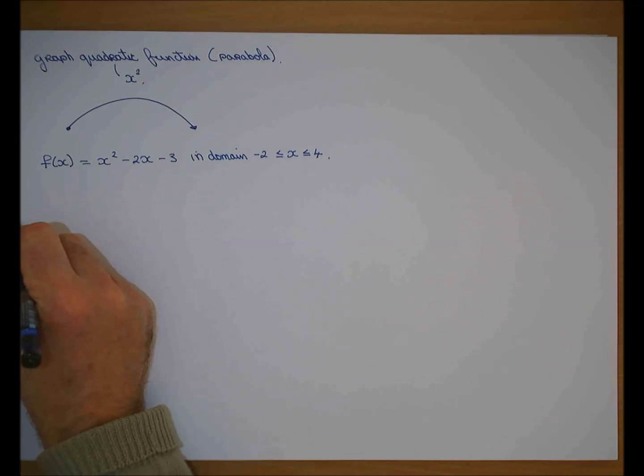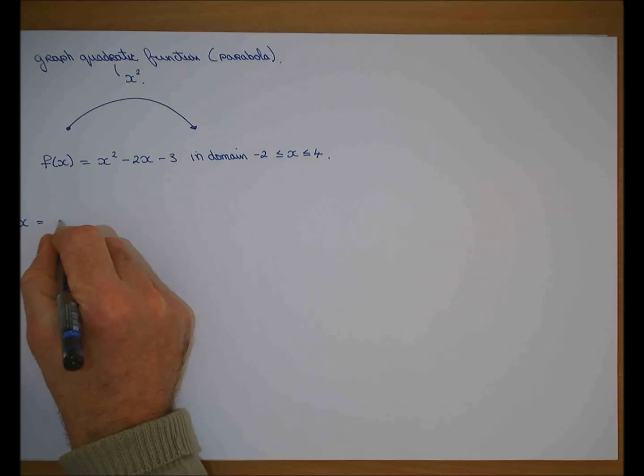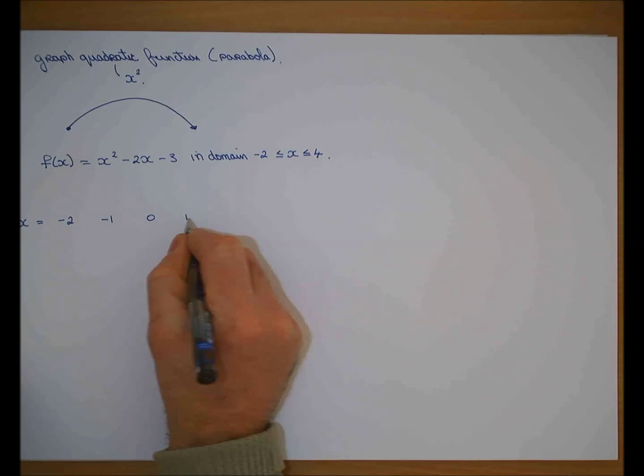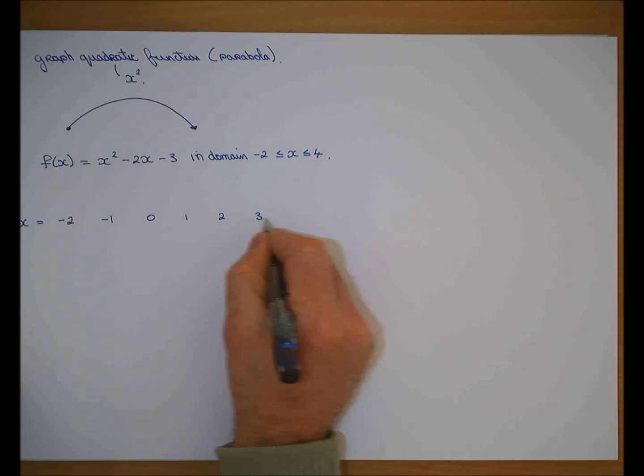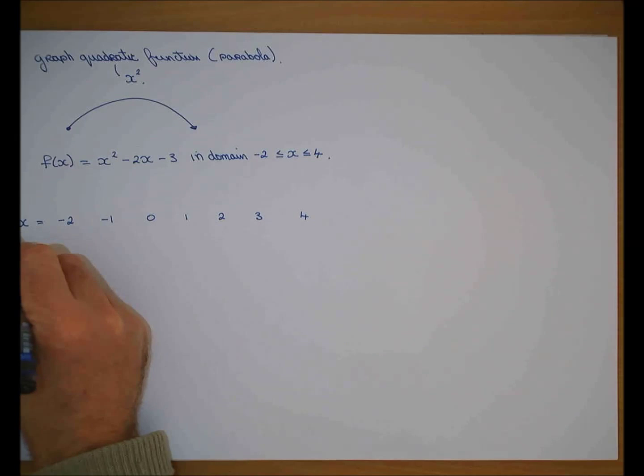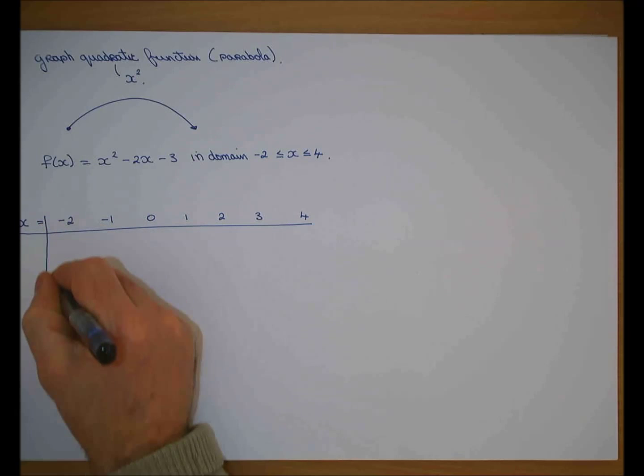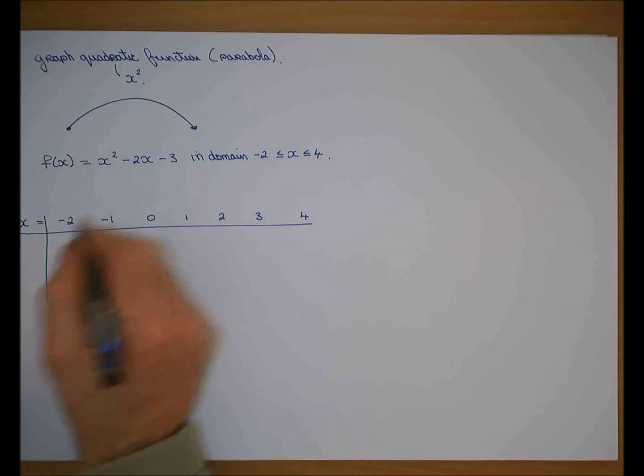Well if that's the quadratic graph, what are the x values that you take? Minus 2, minus 1, 0, 1, 2, 3, and 4. Any questions? There's your domain.